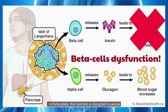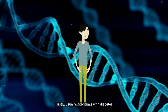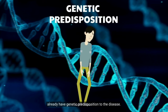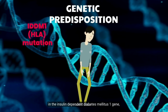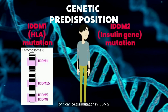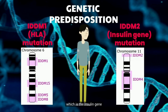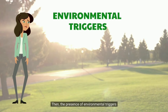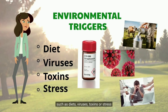Unfortunately, this function is disrupted in people with type 1 diabetes. Firstly, individuals with diabetes already have a genetic predisposition to the disease. It can be either the mutation in the insulin-dependent diabetes mellitus 1 gene, in short IDDM1, or it can be the mutation in IDDM2, which is the insulin gene, making them more likely to develop diabetes. Then, the presence of environmental triggers such as diet, viruses, toxins, or stress enhance the likelihood of them getting the disease.